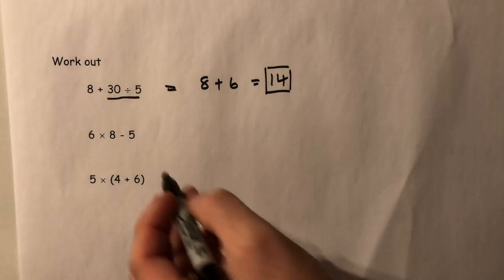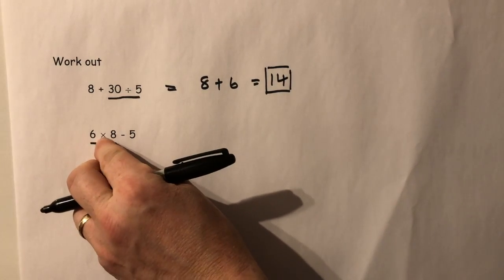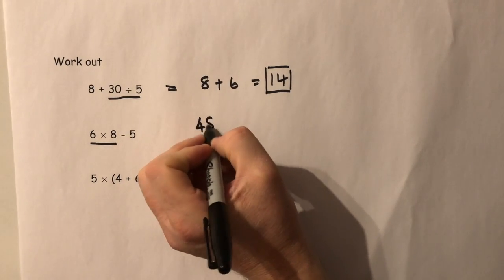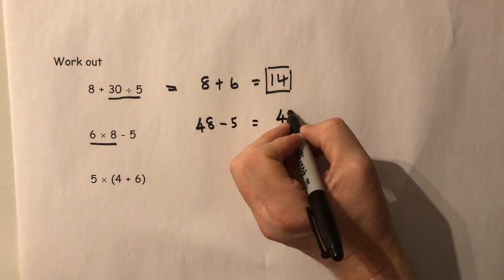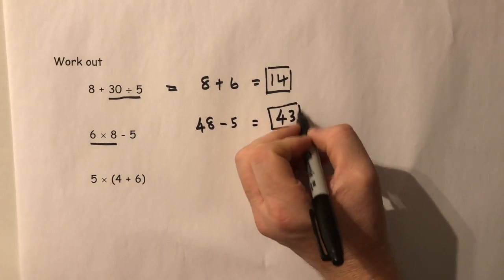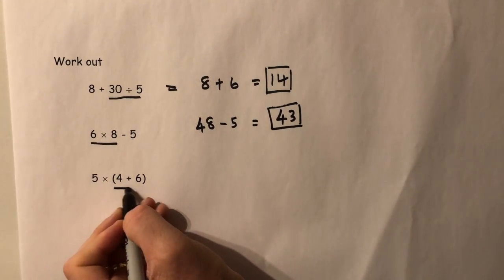In the second question, we must do the multiplication first. So we've got 6 times 8 is 48, then we can take the 5, so that one is 43. Answer.